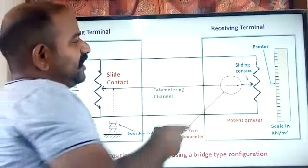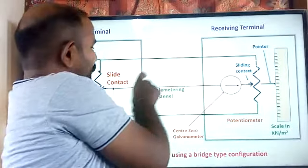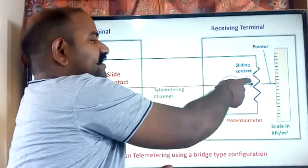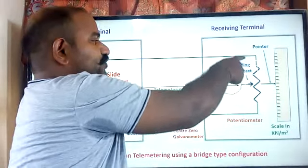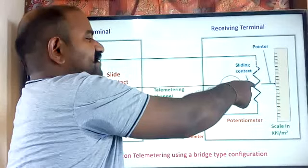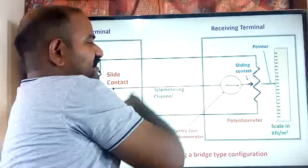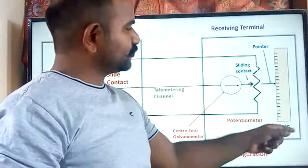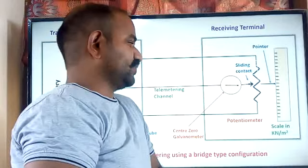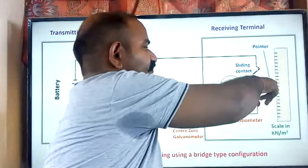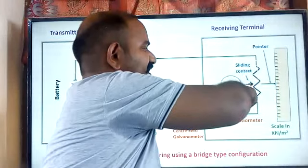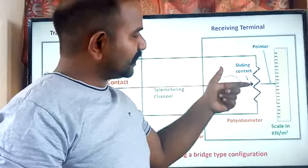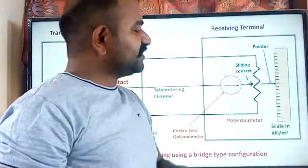At the destination, we use another sliding contact potentiometer such that, depending on the information coming through the telemetering system, the sliding contact adjusts its position to match the position of the transmitting end. One end of this sliding contact is connected to a scale which shows the information in terms of pressure in kilo Newton per meter square. Whenever there is a change in the sliding contact position, the same change is reflected on the scale to indicate how much pressure is being sensed from the Bourdon tube.